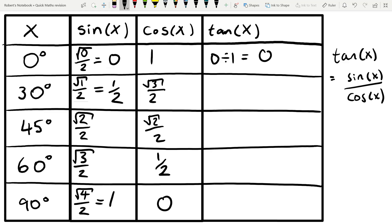Then you've got 1 half divided by root 3 over 2. And when you divide by a fraction, you flip it and times it. So we've got 1 half times 2 over root 3. So those cancel. And we get 1 over the square root of 3, which, when we rationalise the denominator, gives us root 3 over 3.